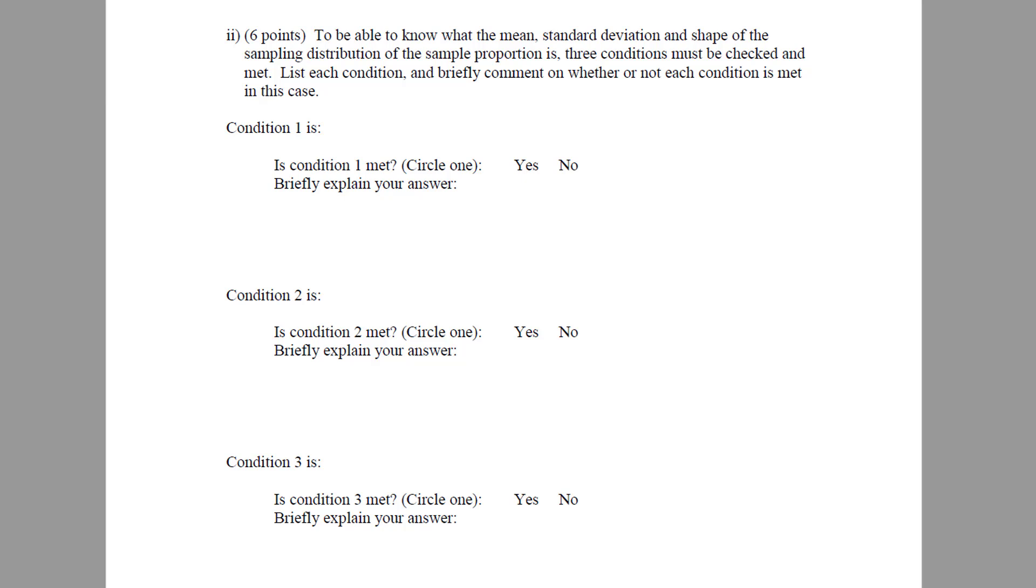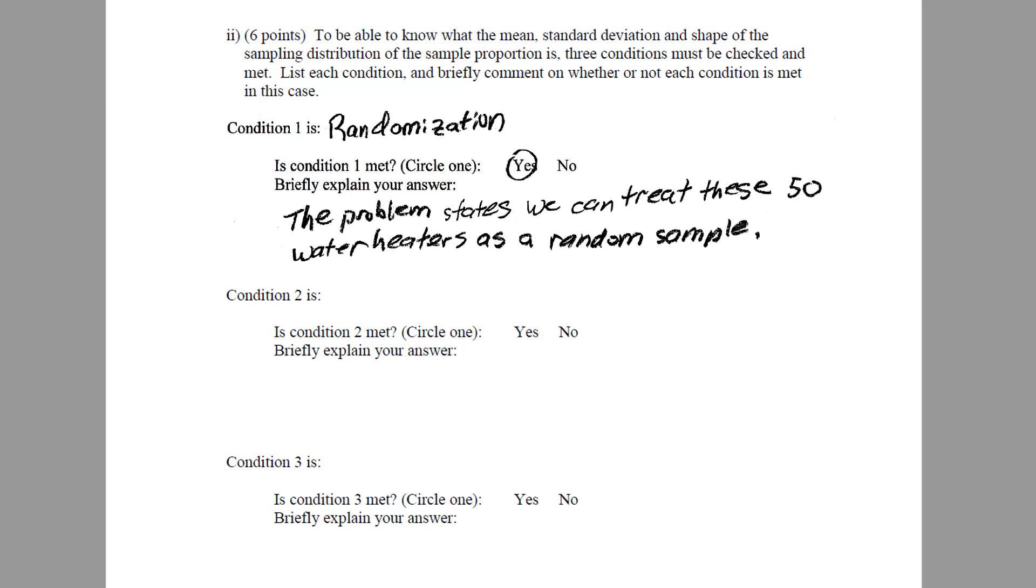Next, to be able to know what the mean and standard deviation in the shape of the sampling distribution of the sample proportion is, we must meet three conditions. So let's go ahead and check these conditions and comment on them briefly. So condition number one: first, we must have a random sample, and the problem states that these are a random sample. So yes, we definitely meet the first condition because the problem states that we have a random sample. And that is key. On the test, make sure the problem says that we have taken a random sample, and thus we have met the random condition.